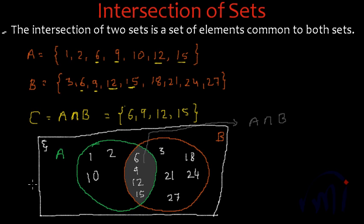So this is the definition of intersection and this is how we represent intersection using a Venn diagram. In the next video we are going to talk about the cardinal number of union and intersection together. So keep watching MathSmart — bye-bye till then.